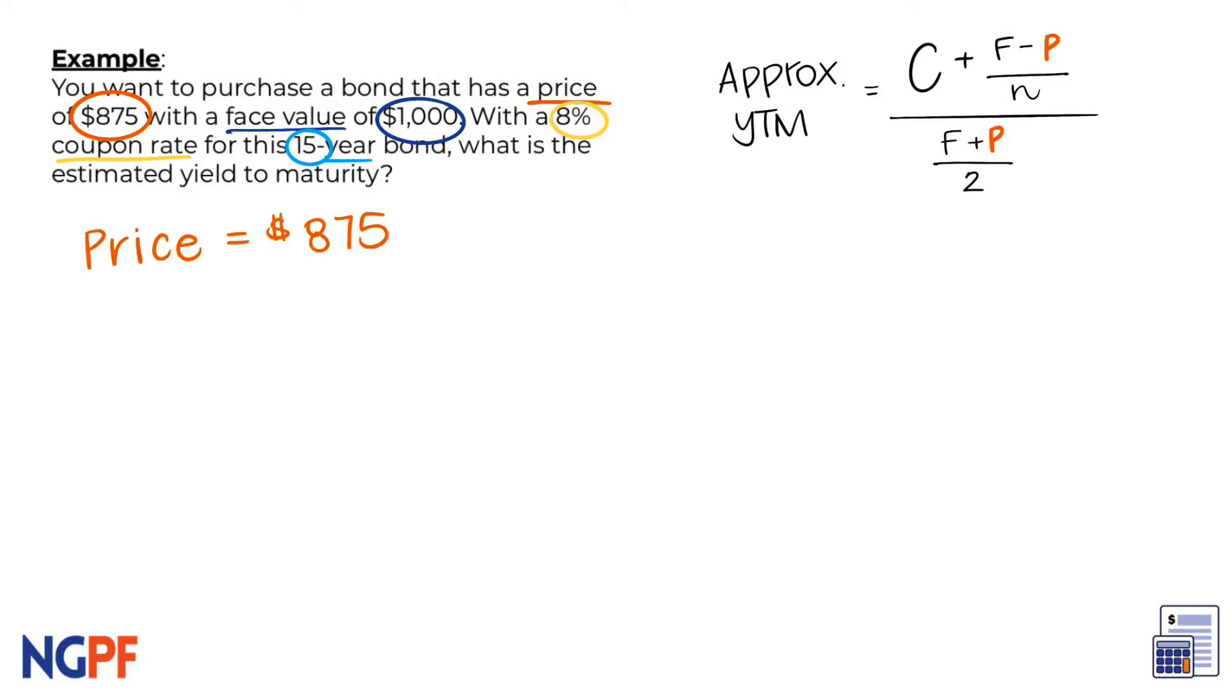We will need the price of $875 and the face value of $1,000. Now, we are provided with a coupon rate, but we need that coupon payment, so we can take the percent rate and multiply it to the face value. In order to find 8% of $1,000, we can multiply 0.08 times $1,000, which gives us $80.